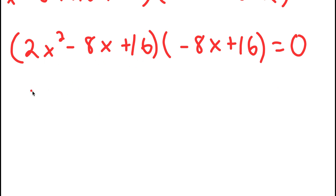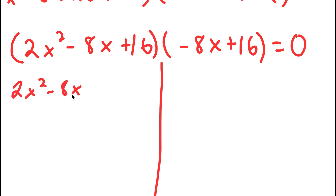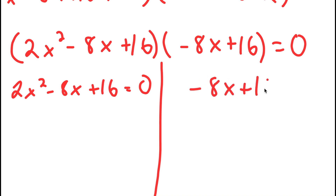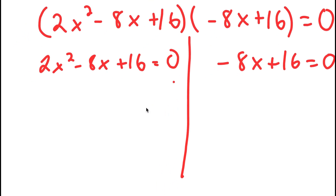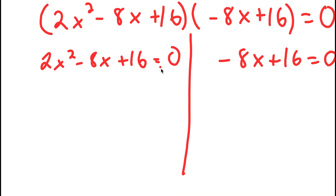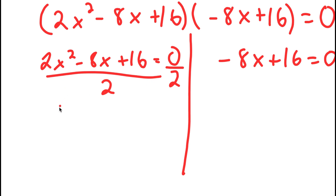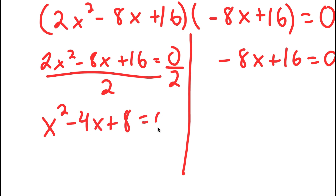Now, 2x squared minus 8x plus 16 times negative 8x plus 16 equals 0. This can be divided into two equations. The first is 2x squared minus 8x plus 16 equals 0. Dividing both sides by 2, I get x squared minus 4x plus 8 equals 0.